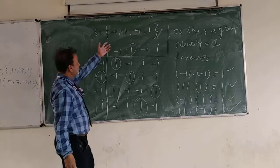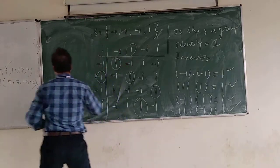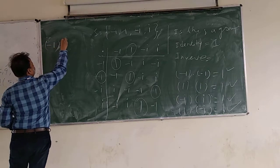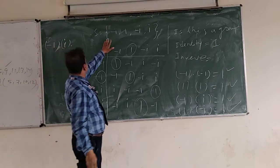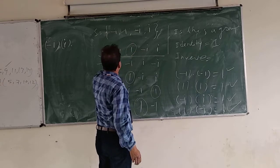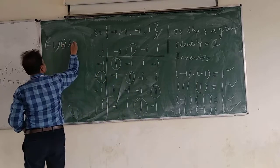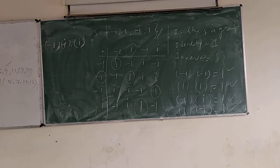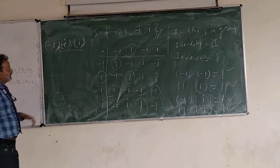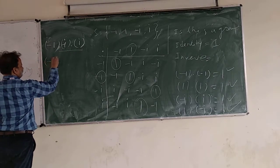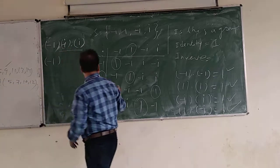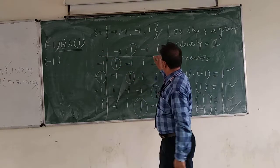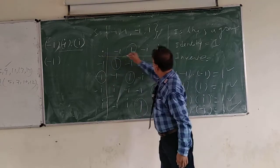Let us take any three elements: minus 1, minus i, and i. We check associativity. First, we perform the inner operation: minus i multiplied by i. Minus i multiplied by i gives us 1.